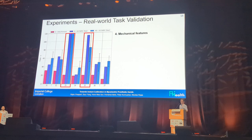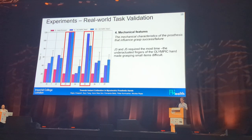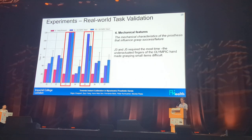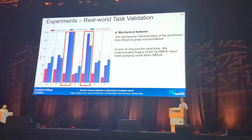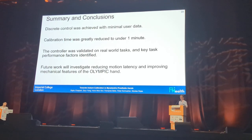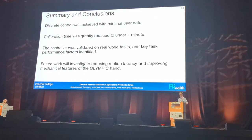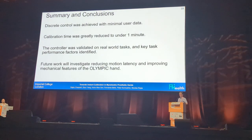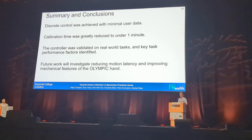Finally, the mechanical features of the Olympic hand have a big impact. The Olympic hand has underactuated fingers, which means that if you prematurely contact anything or mistime it, they won't close in the same way and you won't achieve the pinch grasp of small items. So in summary: discrete control was achieved with minimal user data and calibration under a minute. We validated it on real-world tasks and saw that body power is much better — but we identified key performance factors that will influence future work, mainly around reducing motion latency and improving mechanical features of the Olympic hand.